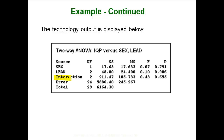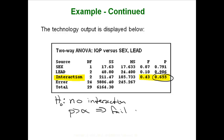The first thing you always look at is the interaction effect — there is your test statistic and p-value for the interaction. The null is that there is no interaction. Because our p-value is greater than alpha, we fail to reject. So even though the interaction graph seemed to show an interaction because those two lines were not really parallel, when we run the numbers we fail to reject and conclude there is in fact no interaction. Those two lines just weren't unparallel enough — it is a subjective thing, which is why you have to run the numbers.